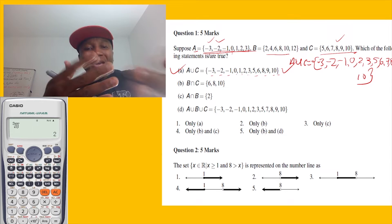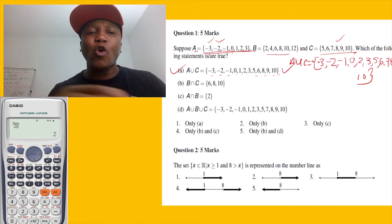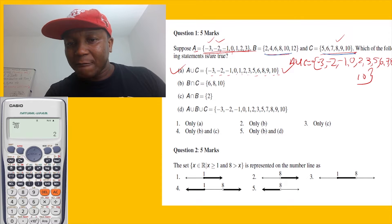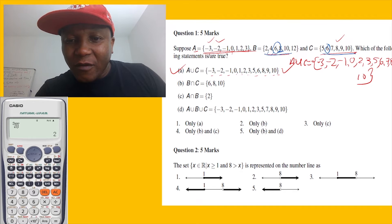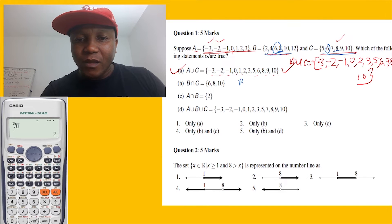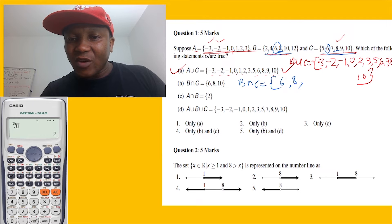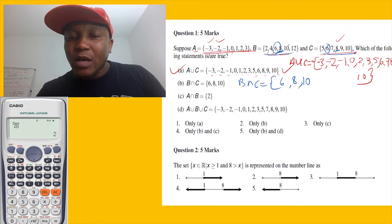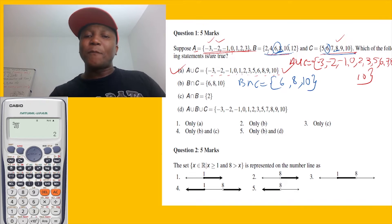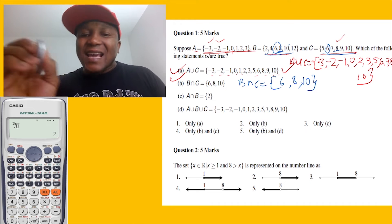Intersection means common elements — like where two sets meet. So looking at B and C, we find what they have in common. Six is common for both, eight is common for both. So B intersection C gives us the elements 6, 8, and 10, which is true.